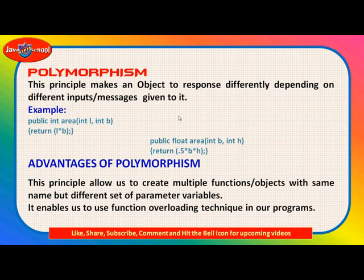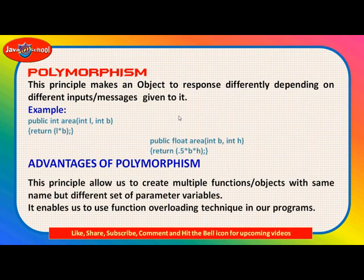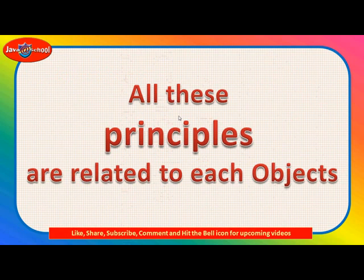The advantage of polymorphism is that it allows us to create multiple functions or objects with the same name but different sets of parameters and return types. It enables us to use function overloading in our programs. Through function overloading, polymorphism can be achieved. All these OOP principles are related to each other and to every object we create in our program.